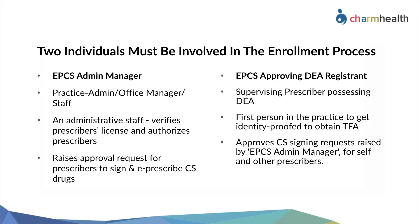The approving DEA Registrant should be a prescriber or supervising prescriber possessing a DEA number. The approving DEA Registrant needs to go through the Experian Identity Proofing process first so that they can obtain the two-factor authentication token. Once they have gone through identity proofing, they can approve the EPCS Admin Manager for signing requests for self and other prescribers who are going through the EPCS enrollment process.